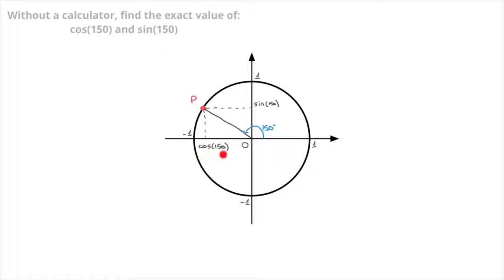Cosine of 150 corresponds to the horizontal coordinate of point P, and sine of 150 corresponds to the vertical coordinate of point P. To find their values, the first thing we do is make a note of the angle separating point P from 180 degrees. Since we went through 150 degrees to get to P, there are 30 degrees separating P from 180.